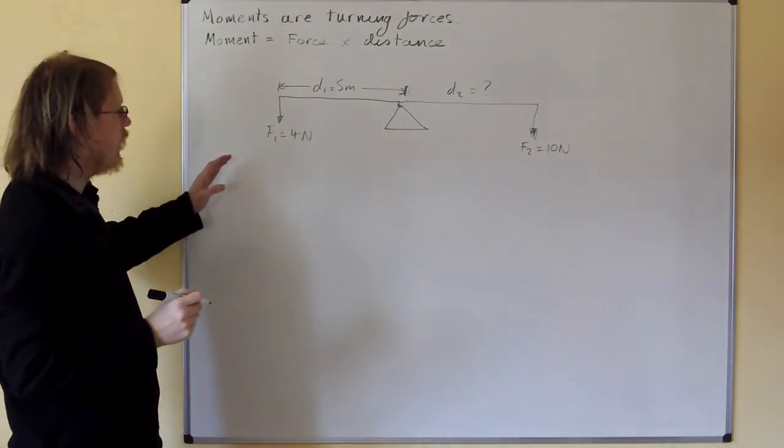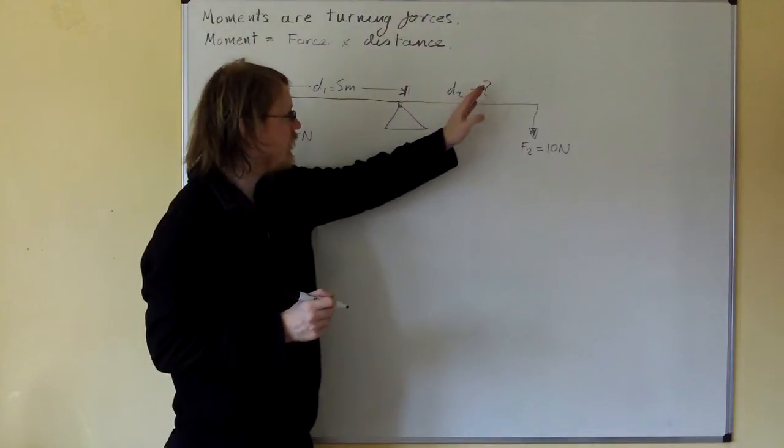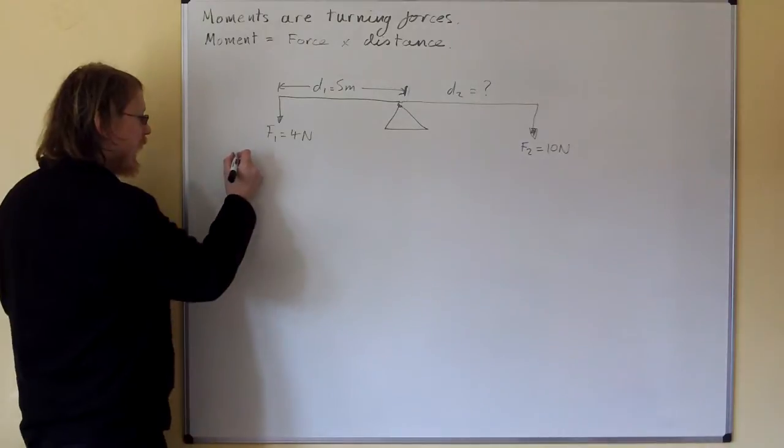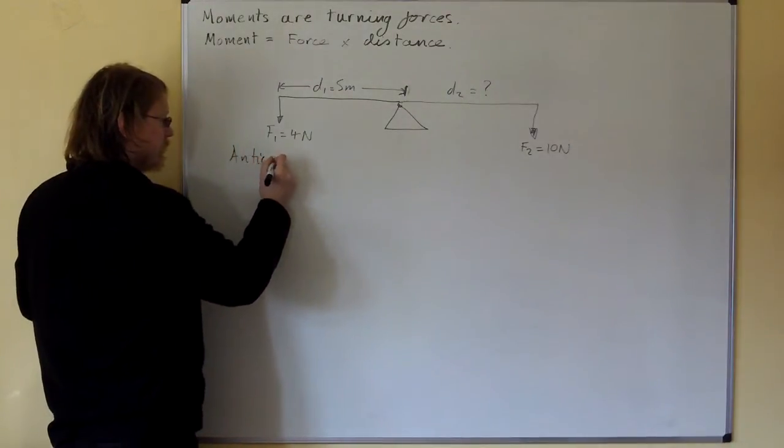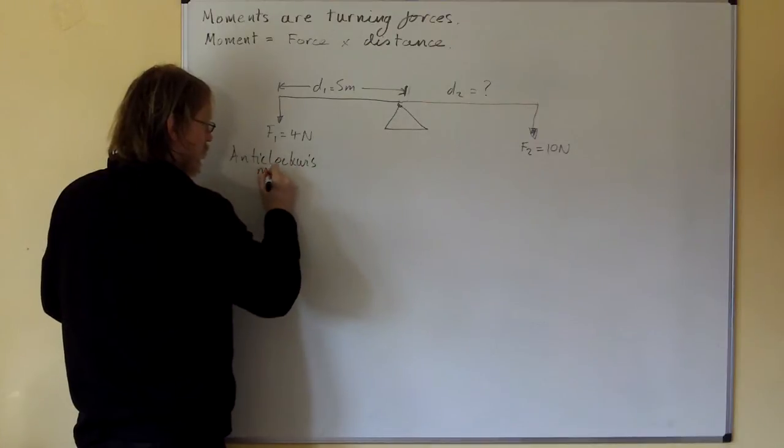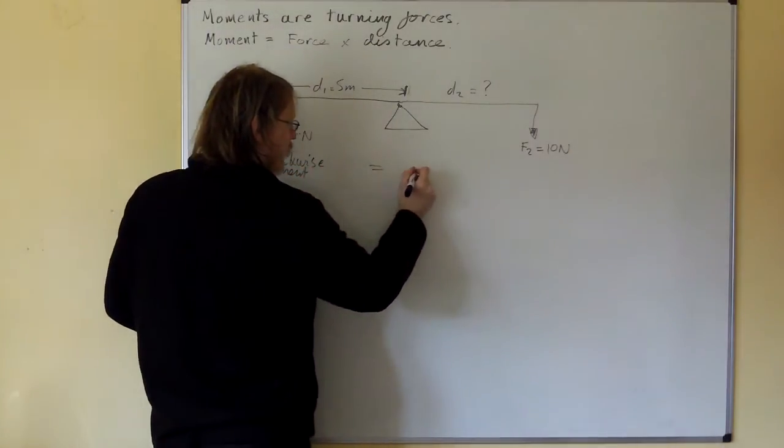Right, so here we've got f1 equals 4 newtons, d1 equals 5 metres, d2 equals, we don't know, and f2 equals 10 newtons. So, anti-clockwise moment must equal clockwise moment.